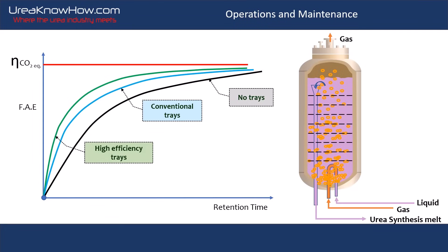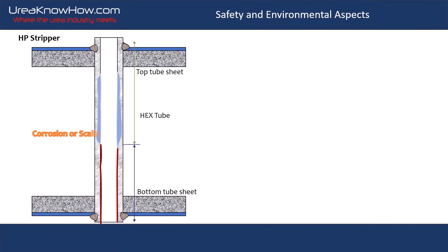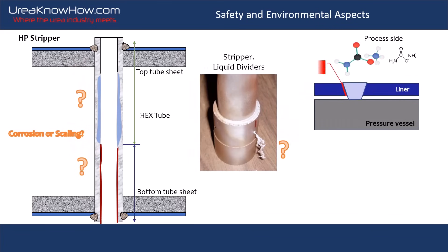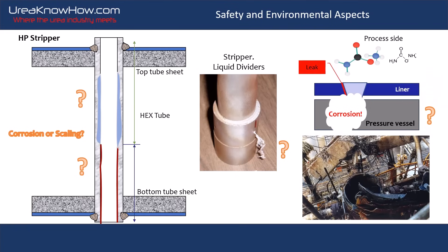Efficient operations and maintenance are key to reliable production. In this program, you will learn about key performance indicators, process control methods, and how to perform repairs and troubleshoot issues. We will explore high-pressure synthesis equipment, focusing on process and mechanical aspects such as liquid dividers, fouling, liners and corrosion prevention.